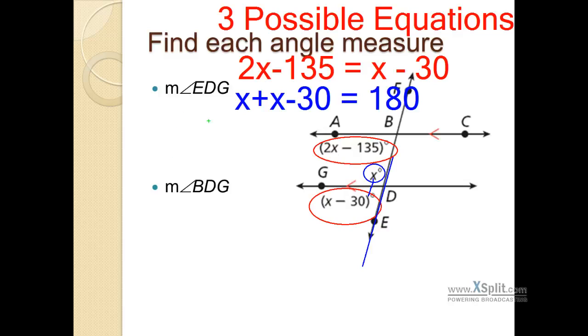Lastly, another equation I could write. These two angles are going to add up to 180 because they're same side interiors. So I could potentially write 2x minus 135 plus the x equals 180 again. So three different options for equations I could write.